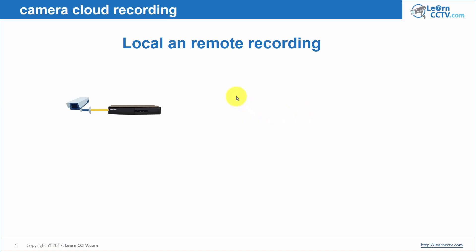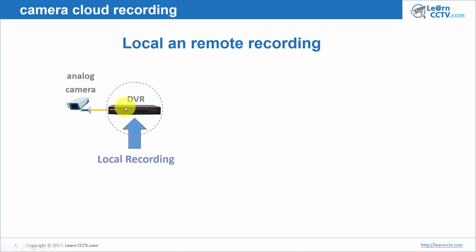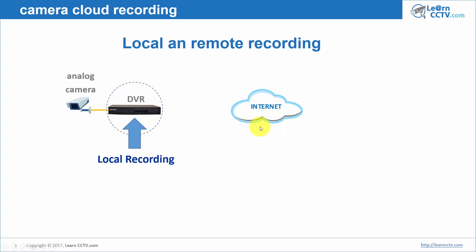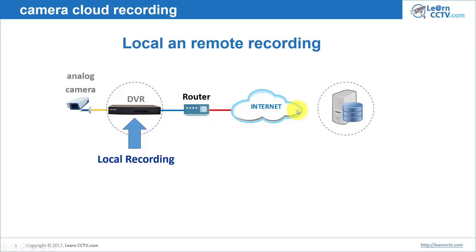Here in my computer I have a diagram. Basically I have an analog camera. The analog camera can send the signal to a DVR and then the DVR can record locally. I have my local recording just right here. And then I have the internet and my router, so I can connect my DVR to the router and from the router I connect to the internet. Somewhere on the internet I have a server, and I can connect to the server and then I have my cloud recording, meaning I'm recording remotely.